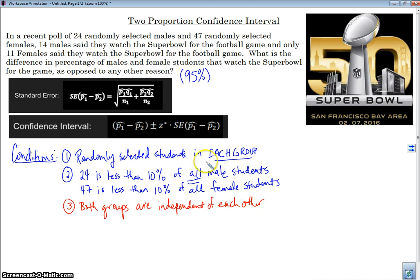Namely, we can't have somebody in both groups that took our poll. These are obviously independent groups. There's no males that are in the female group. So, that was a new one. And our last one is NP and NQ. So, we have to do it for both groups. So, N1, P1, this is the number of successes. And I can multiply, it's P hat one, sorry. I can multiply these, but I already have the number of successes here. 14 out of 24. So, there are 14, which is definitely greater than 10.